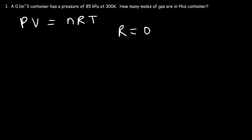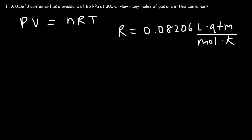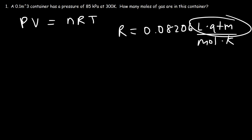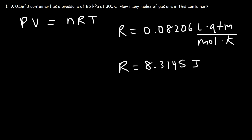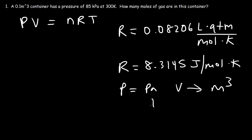In chemistry, the R value is 0.08206 liters·ATM per mole per Kelvin. If you use this R value, the volume must be in liters and the pressure in ATM. In physics, we use R = 8.3145, which requires pressure in pascals and volume in cubic meters. Note that 1 pascal equals 1 newton per square meter.